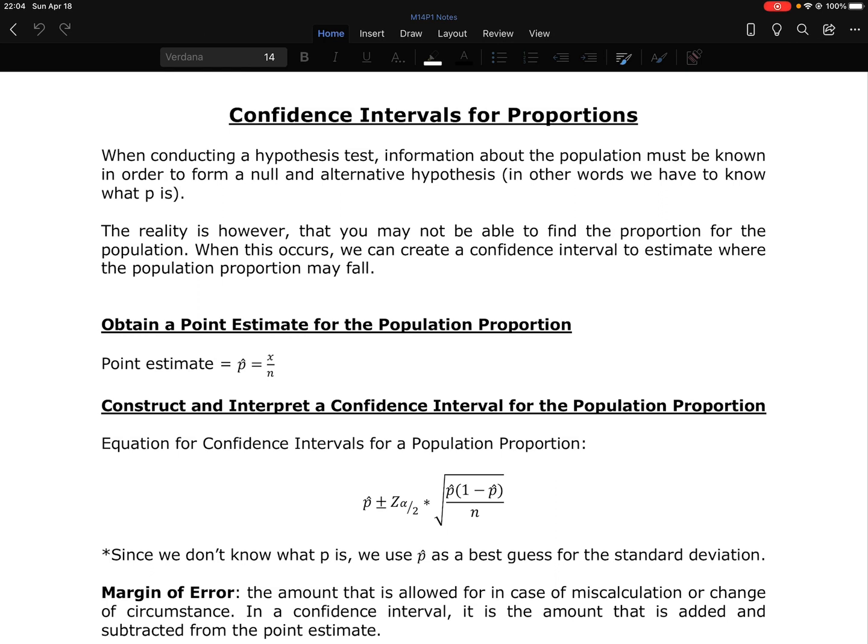The first thing is obtaining a point estimate for what the population proportion might be. So this is like our starting point. We're saying, okay, I don't know what the population proportion is. And remember, the population proportion is p. So I'm going to find a best guess as a starting value. And in the case of proportions, that best guess, that point estimate, is p hat, our sample proportion.